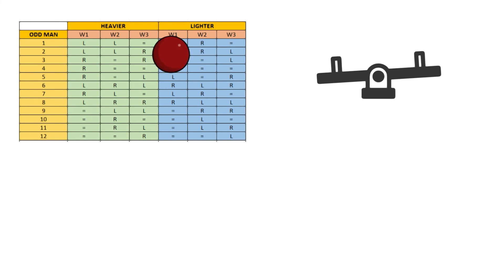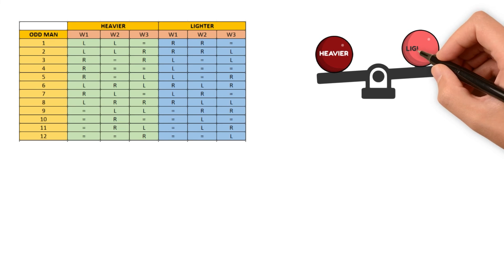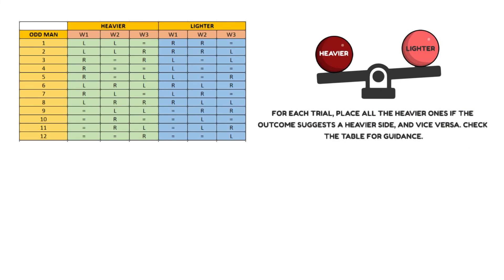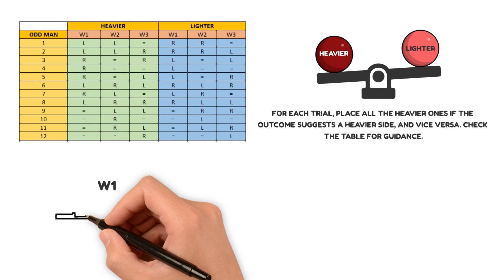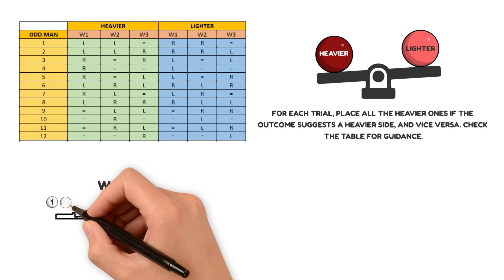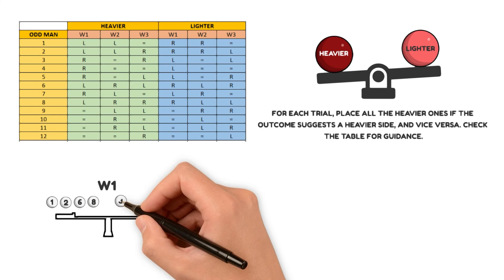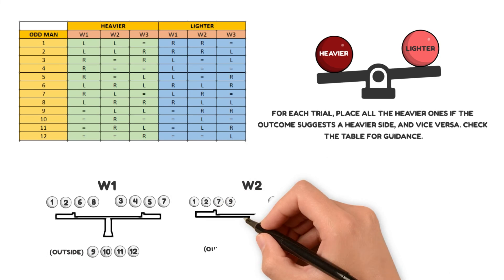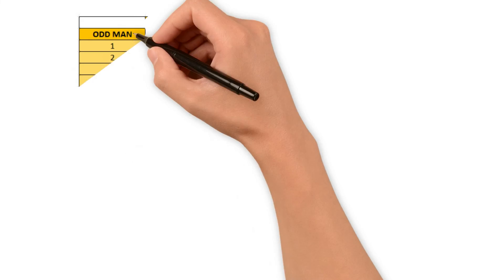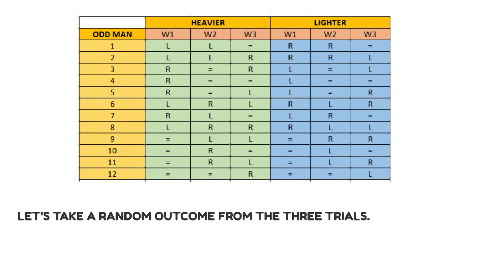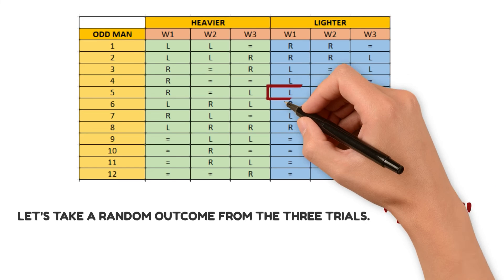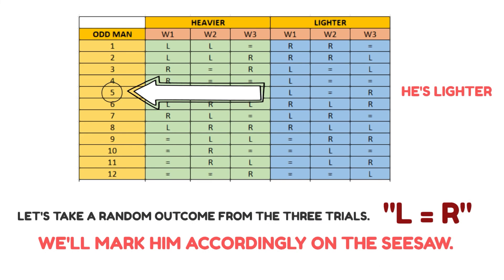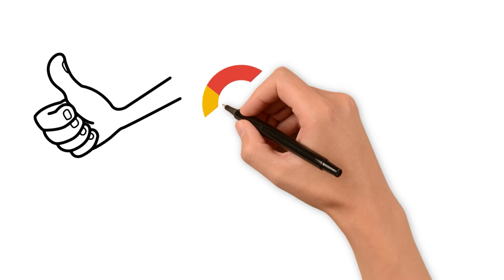When placing the men on the seesaw, gather the heavier ones together and the lighter ones together. For each trial, place all the heavier ones if the outcome suggests a heavier side and vice versa. Check the table for guidance. For example, in the first trial, place men 1, 2, 6 and 8 on the left and 3, 4, 5 and 7 on the right, leaving the remaining ones aside. Repeat this for the other trials, following the patterns in the columns. To confirm our process, let's take a random outcome from the three trials. If we find L equal R in the table, the odd man is number 5 and he's lighter. We'll mark him accordingly on the seesaw. This solution perfectly identifies the odd man just as Google would expect.